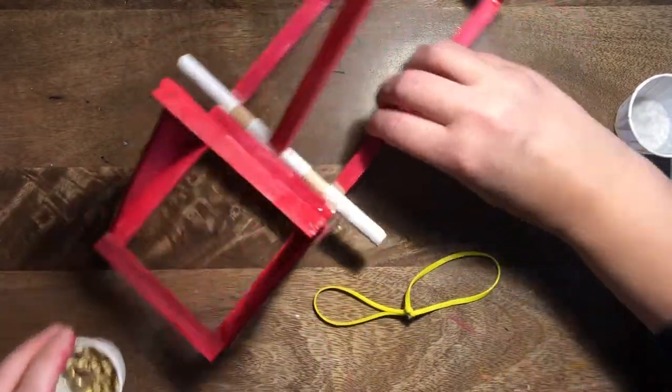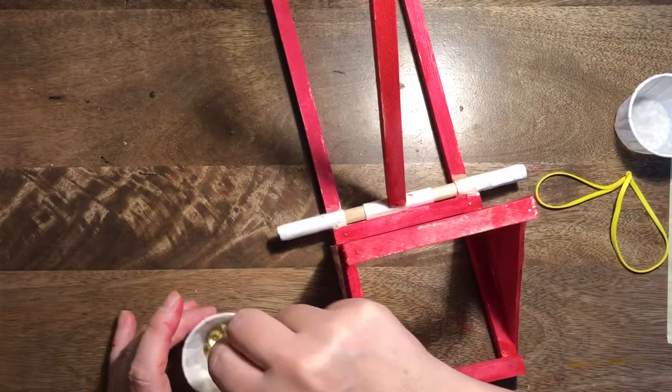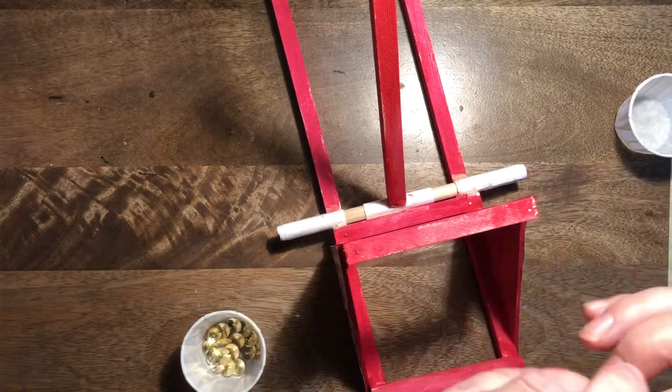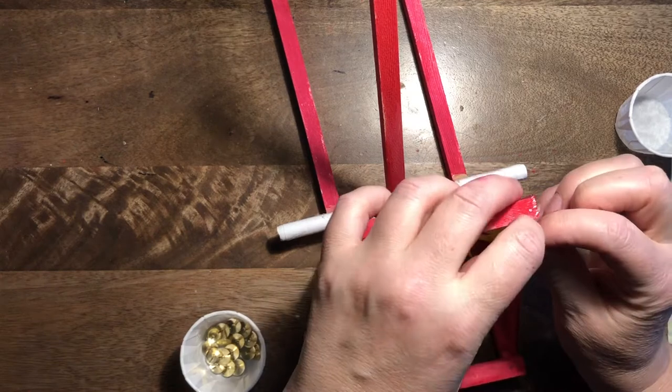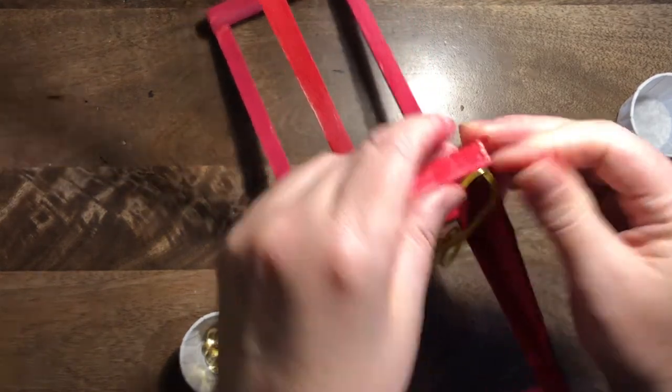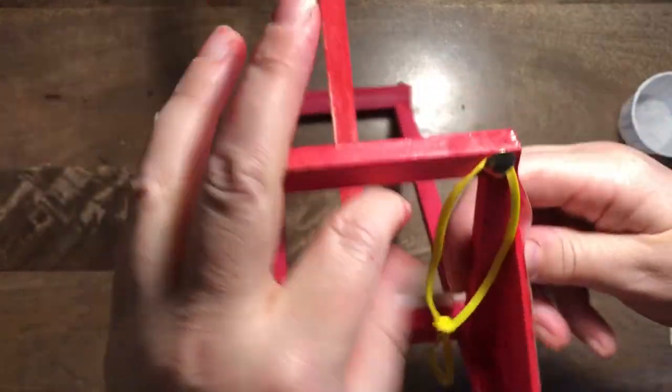Now what we need to do is pin that onto the front, so we're going to use these drawing pins. We don't need to use a hammer or anything like that for this. We loop on the rubber band at one end and we just push it in so it catches the rubber band underneath, and that will hold it in place nice and tightly.